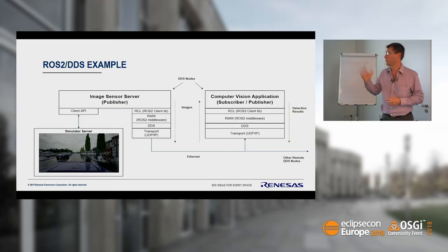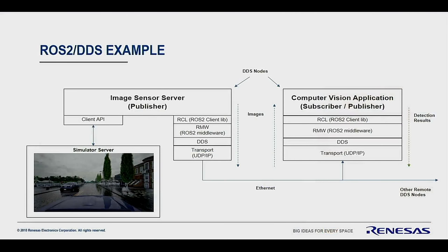As a quick example: on the left side there's a driving simulator with a camera image publisher as a DDS node. The stack includes the RCL — ROS2 client library — and the ROS middleware, which acts as an adapter to create a standard interface for ROS on top of different manufacturers' DDS implementations. The DDS standard is defined at the transport layer, not the control API, so the ROS middleware handles this adaptation for different DDS implementations, making them interoperable.